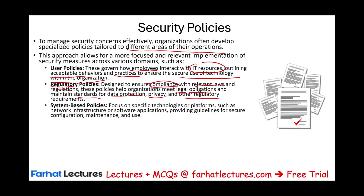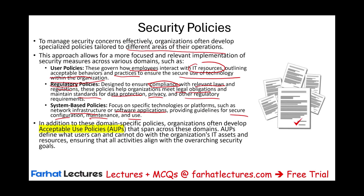Sometimes we might have policies that are system-based — focused specifically on the technology and platforms we're using, such as network infrastructure or software applications, providing specific guidelines for secure configuration, maintenance, and use. We also might have what we call acceptable use policies, or AUPs, that span across these domains. We're going to look at AUPs separately because they are important. AUPs define what users can and cannot do with the organization's IT assets and resources, ensuring all activities align with overarching security goals.